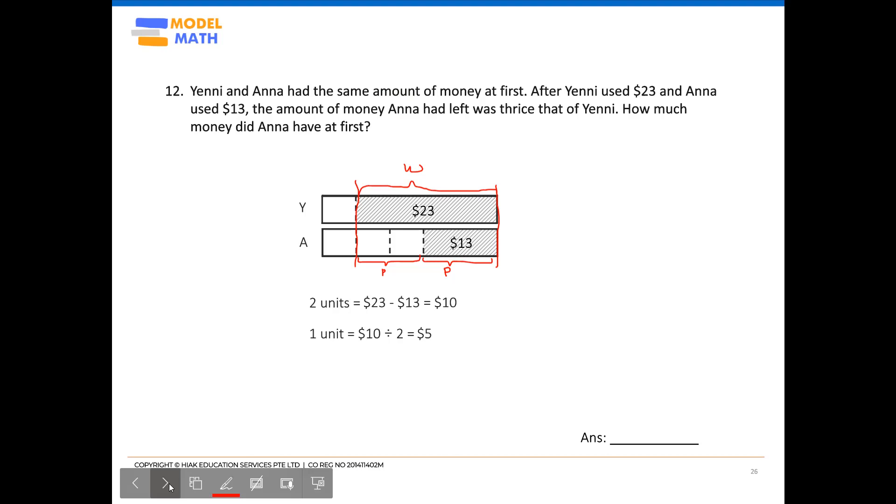If you were to use Anna's model, you will have to find three units first and then adding $13. That would be an additional step. So of course, we will want to pick the fastest method to reach the answer.